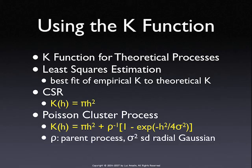If we have a point pattern and want to find out if it is a Poisson cluster process and what its parameters are, we can estimate the K-function for many distances H and relate that back to the expression containing rho and sigma squared. This is observed; the unknowns are rho and sigma squared. As long as we have enough observables — created by computing the K-function at different distances — we can estimate the unknowns by some nonlinear fitting procedure. The more distances you use, the more information you have to estimate rho and sigma squared.